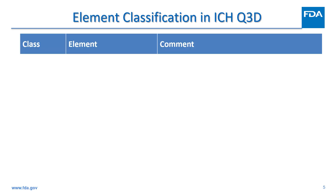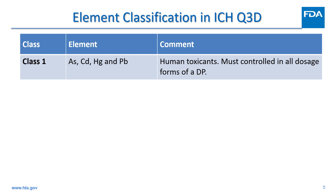The 24 elements included in ICH Q3D have been placed into three classes based on their toxicity and the likelihood of occurrence in the drug product. The Class 1 elements, including arsenic, cadmium, mercury, and lead, are human toxicants that have limited or no use in the manufacture of pharmaceuticals. Because of their unique nature, these four elements require evaluation during the risk assessment across all potential sources and routes of administration.